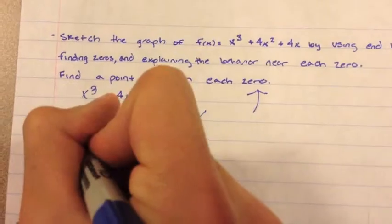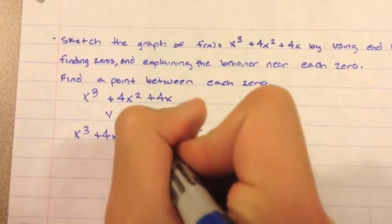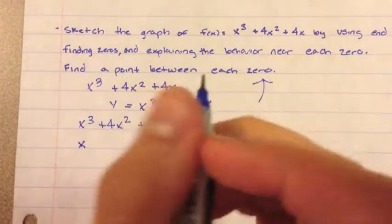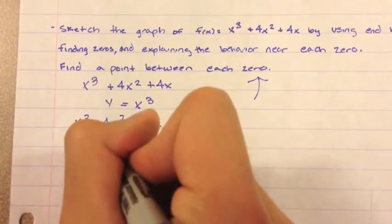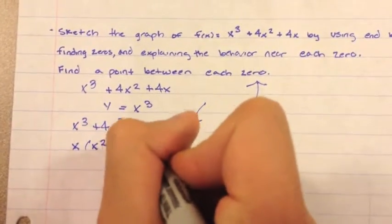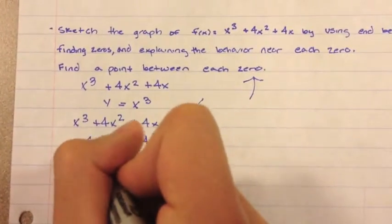And now, with the equation, what we do is just factor it. You can take out an x, and you're left with x squared plus 4x plus 4, and you can break that down even further to x,